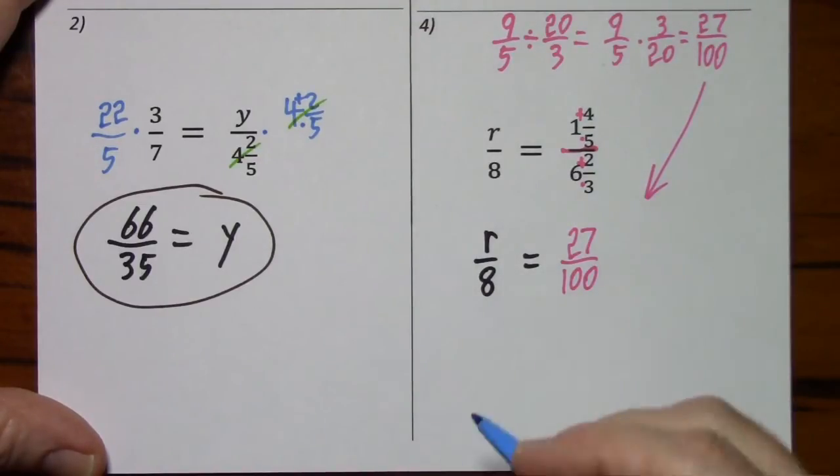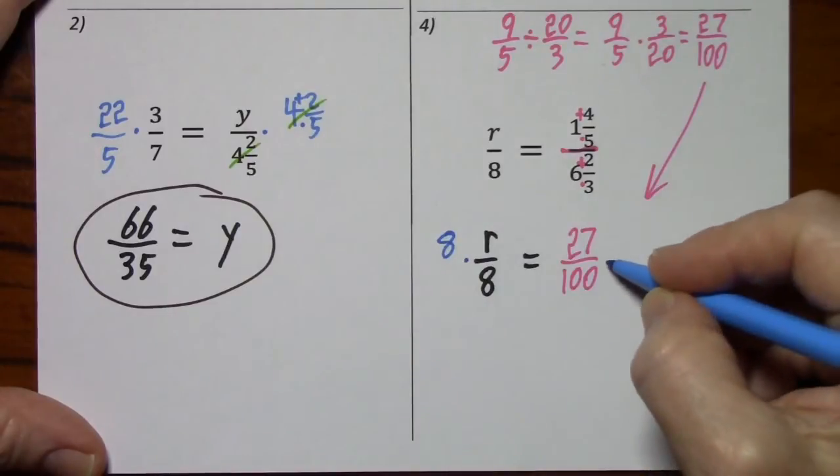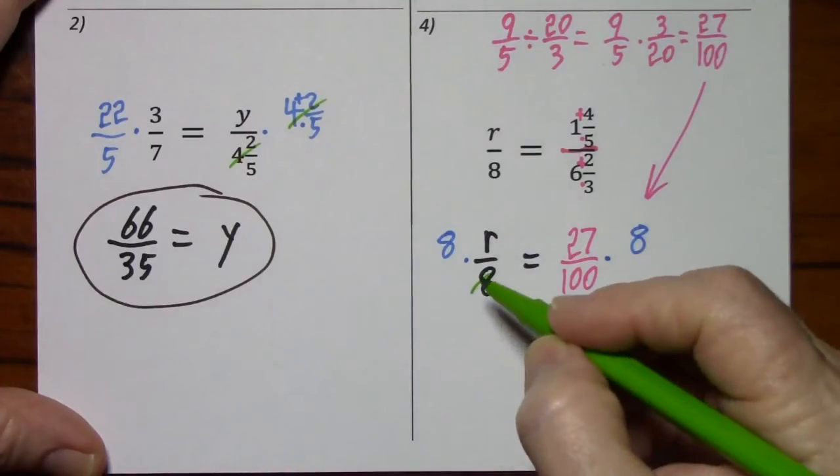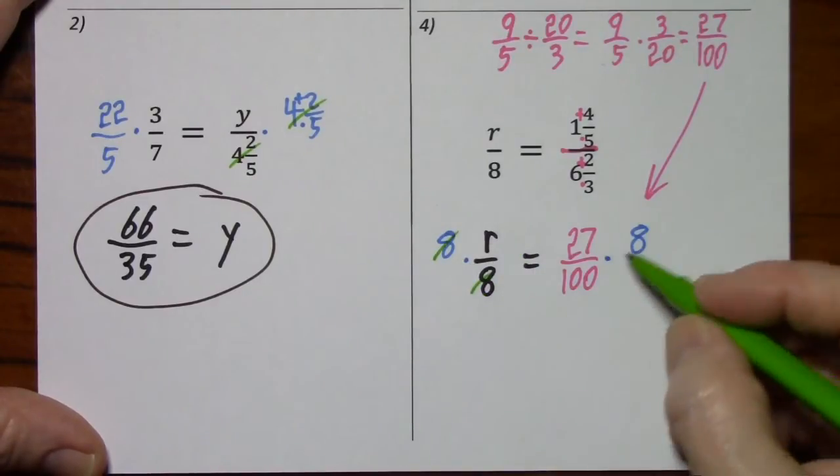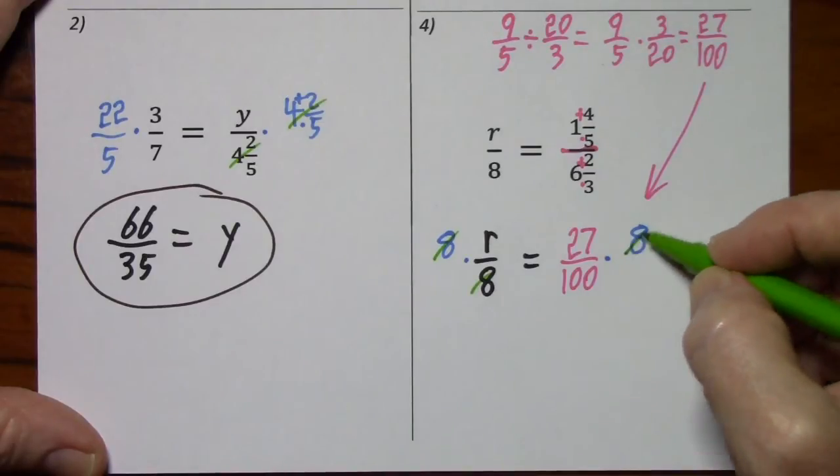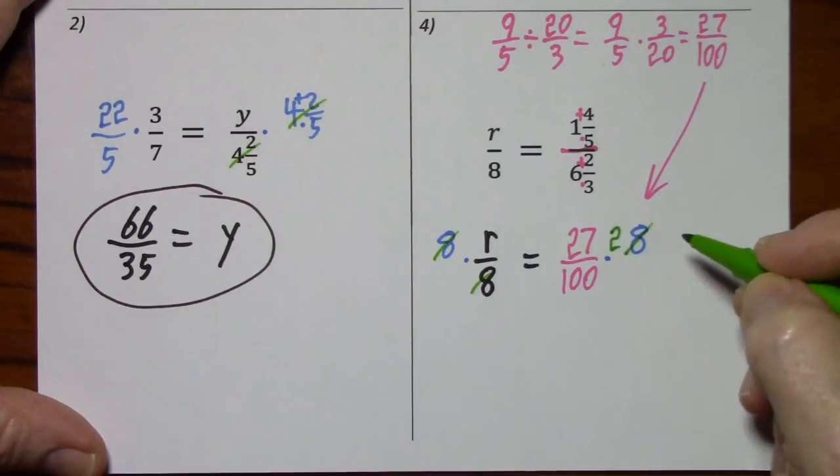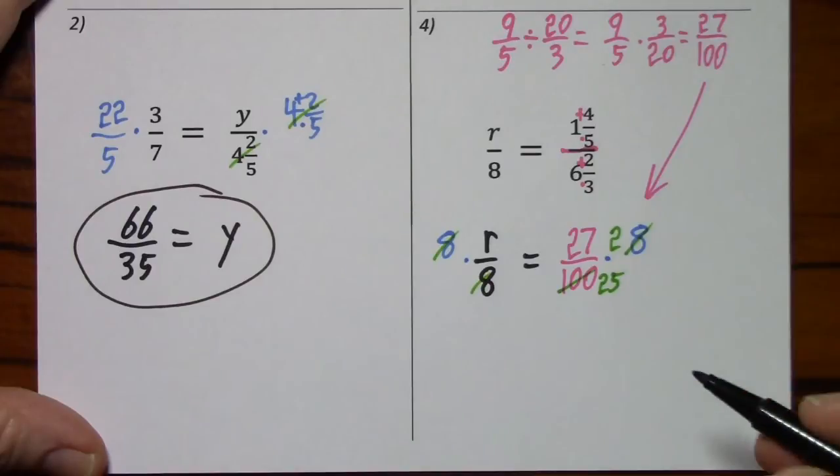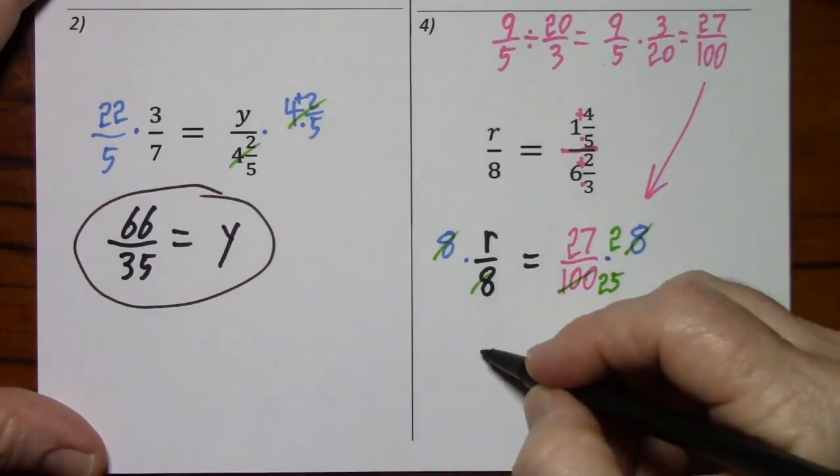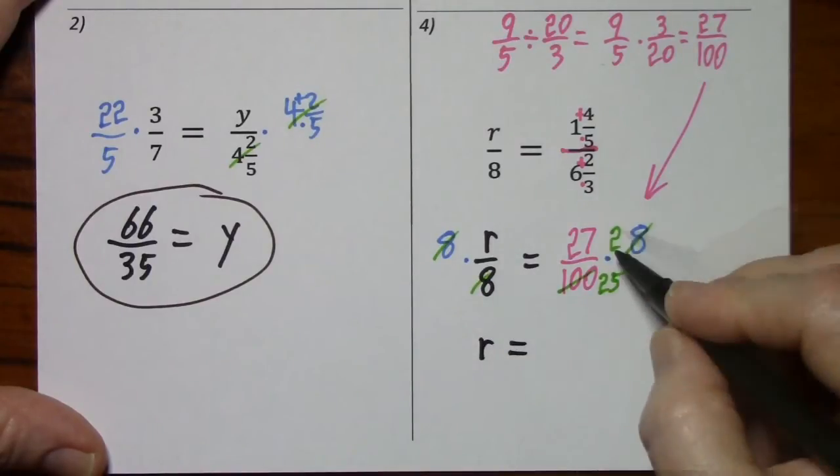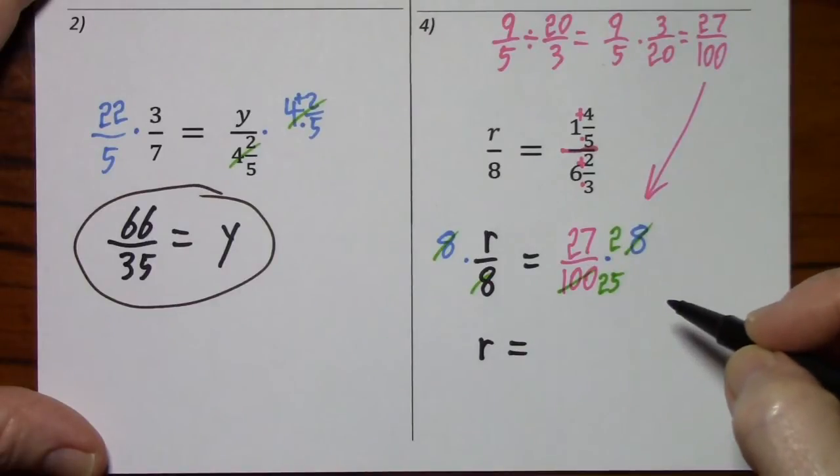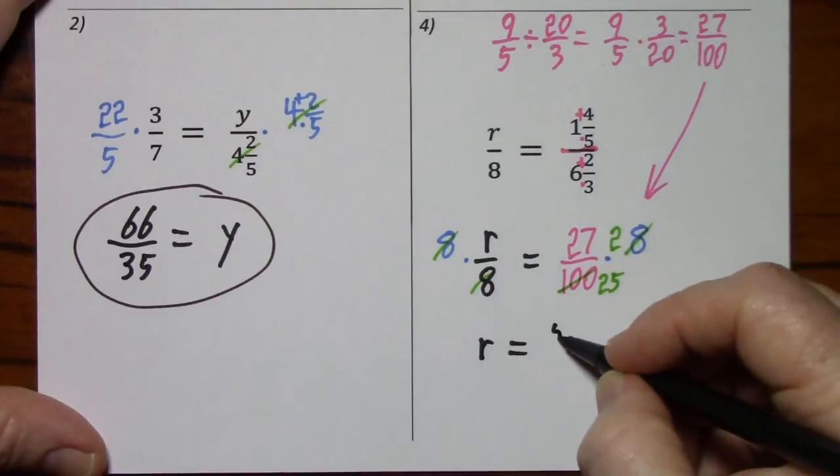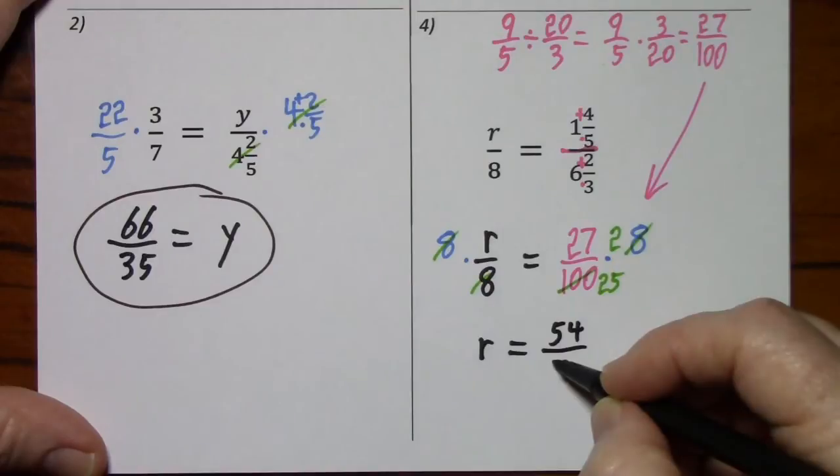We'll bring down the equals and r over 8. All we have to do is get rid of that 8. So multiply by 8. On this side, 8 goes into 8 once. That always happens. Over here, we have a common factor of 4. Divide by 4 leaves us with 2. Divide by 4 leaves us with 25. So we have r is equal to 2 times 27 is 54. And if you're not clear on that, just multiply it out real quick. But we have 54 over 25.